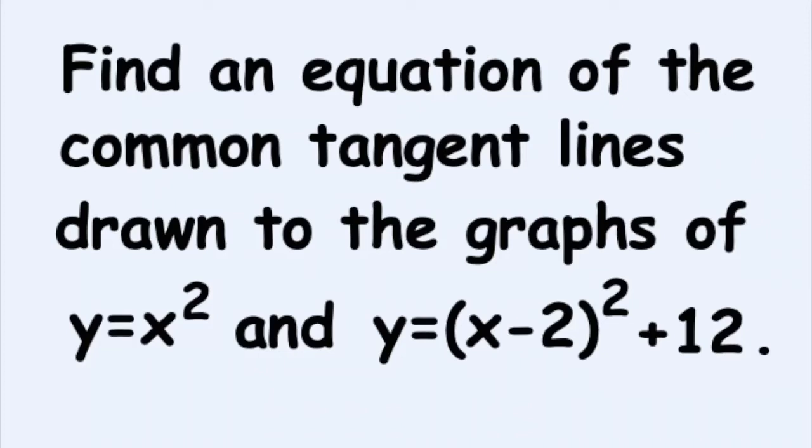Okay, so we're given two parabolas: y equals x squared and y equals x minus 2 squared plus 12. And we have to find an equation for the common tangent line drawn to both of the parabolas.